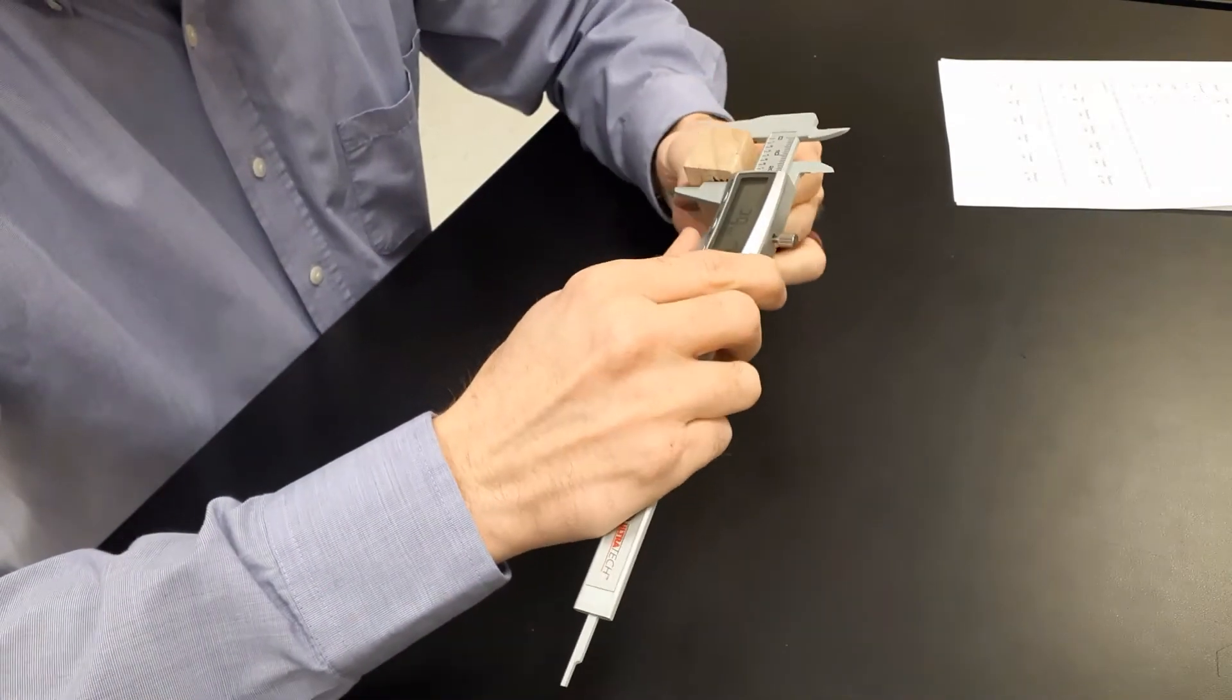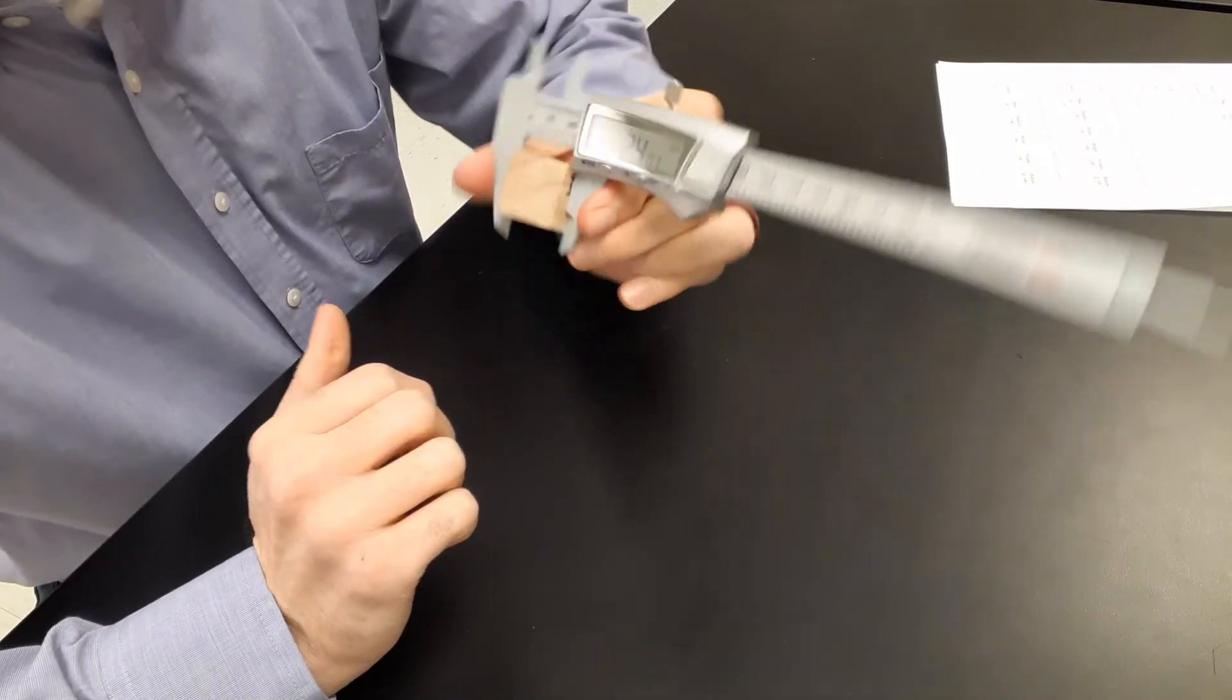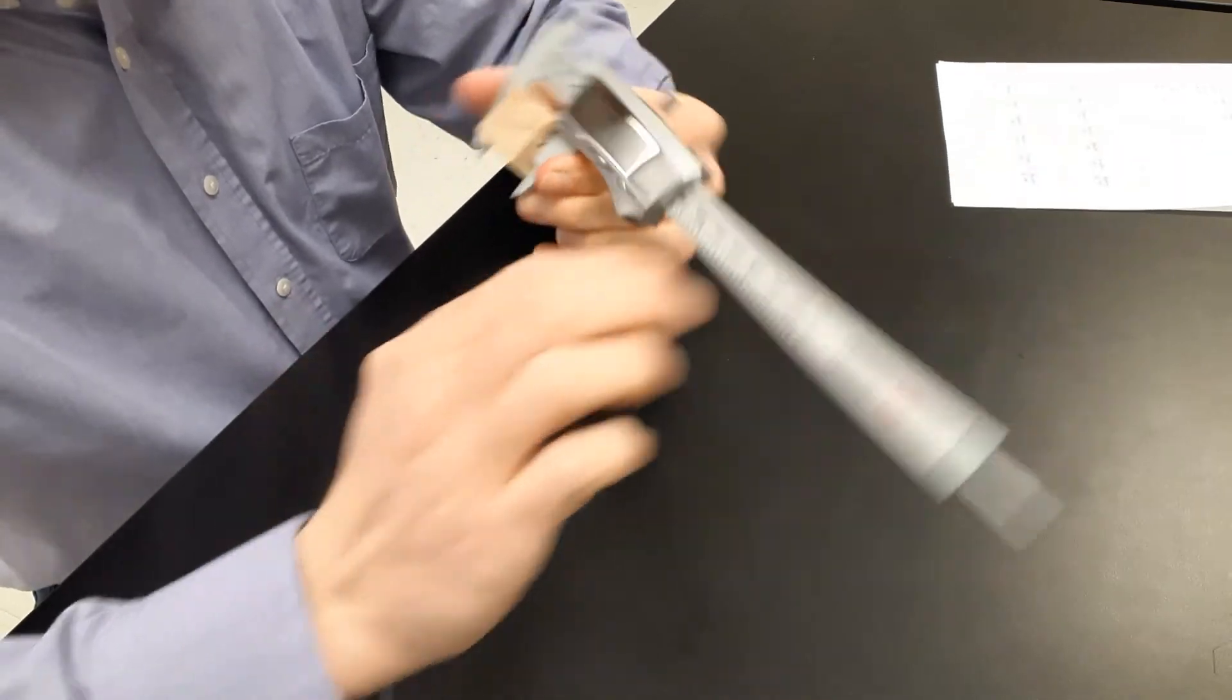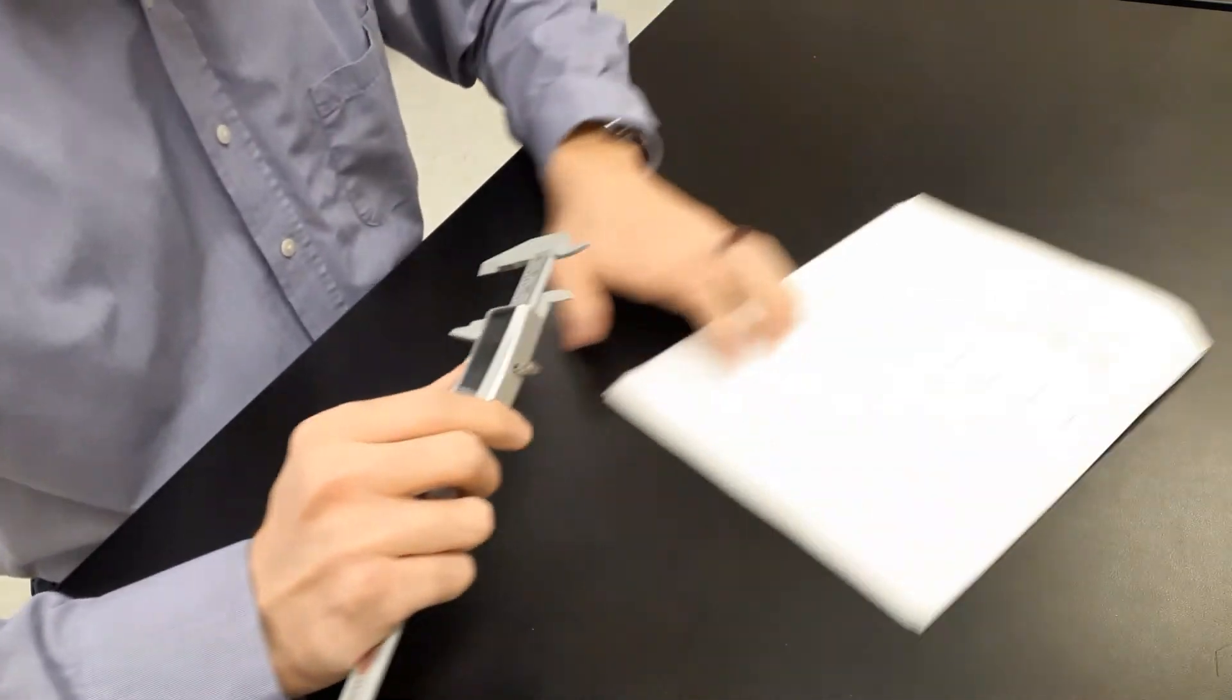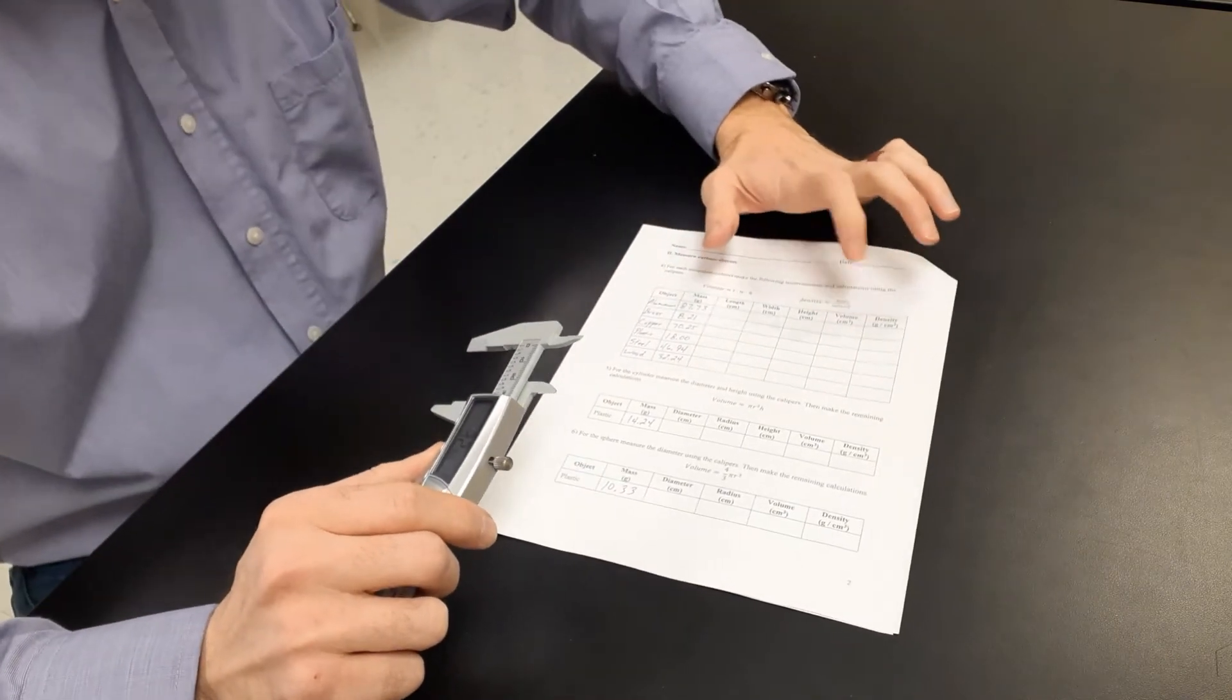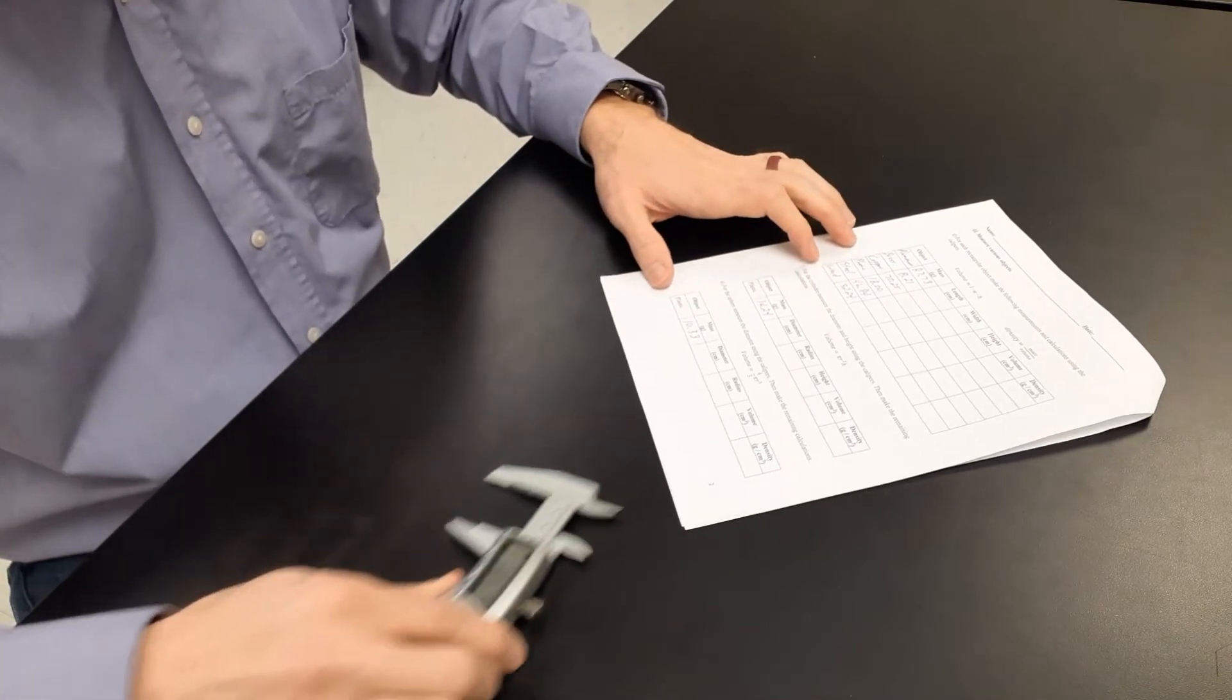And then last measurement here, 24.07 millimeters, 24.07. All right. So now you have each of those lengths, widths, and heights. Now you can calculate the volumes and calculate the densities. And then I'm going to move over to our other two objects.